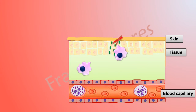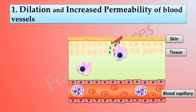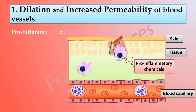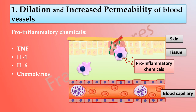The first stage in the process of inflammation is dilation and increased permeability of blood vessels. The damaged cells, which include resident macrophages at the site of tissue injury, release pro-inflammatory molecules. These pro-inflammatory molecules include tumor necrosis factor, interleukin-1, interleukin-6, and some chemokines, and they induce dilation and increased permeability of the blood vessels.